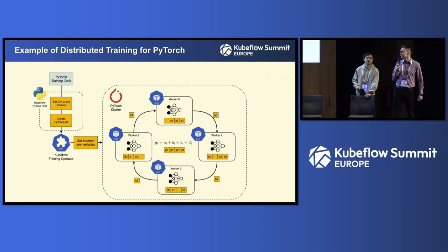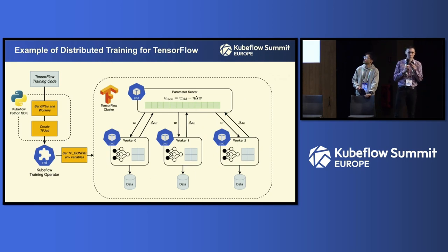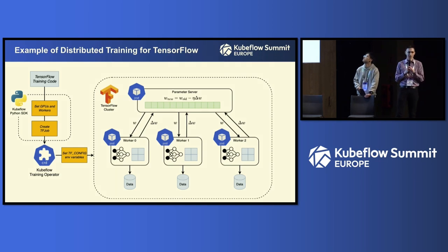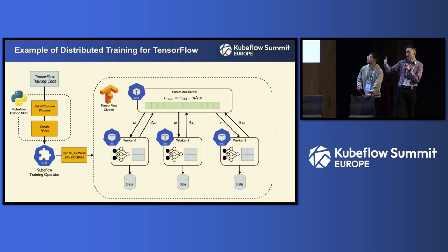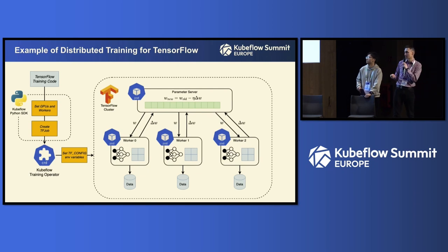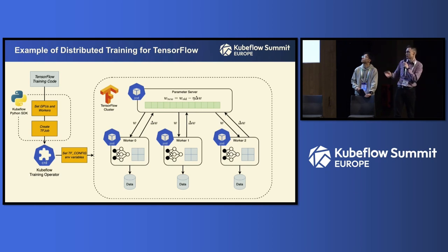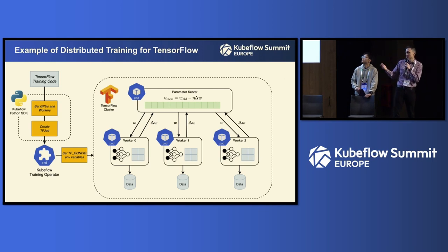Here's an example of TensorFlow distributed training. You can distribute your data across multiple workers, and the Kubeflow Training Operator schedules appropriate workers, sets up environments, and enables training very large models on multiple workers using multiple GPUs. The parameter server generates new weights based on gradient results from all workers.